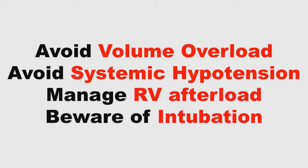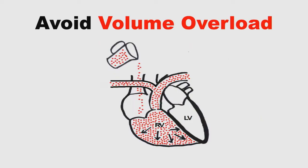Blanket statements are dangerous in RV failure, but in general you want to be cautious with fluids. Giving volume to an already overloaded right ventricle can make the situation worse. Think about giving small 250 or 500 cc boluses and assessing for a response.